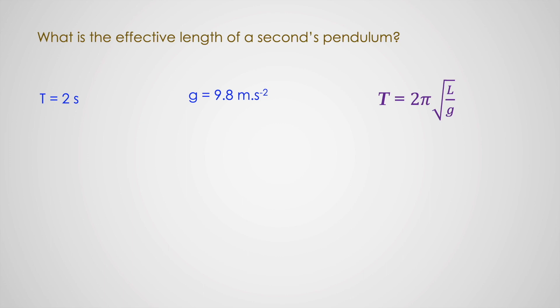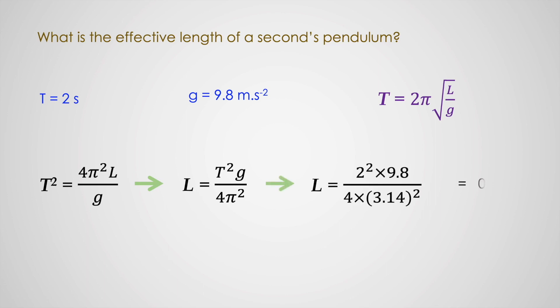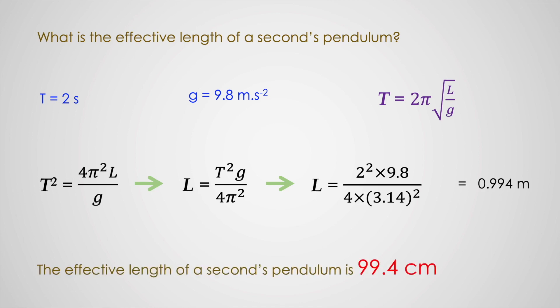We will start by squaring both sides, and after squaring both sides, we make L the subject. When we replace the values, we get L as 0.994 meters, which is equal to 99.4 centimeters. That means the effective length of a seconds pendulum is 99.4 centimeters, which is approximately equal to 1 meter.